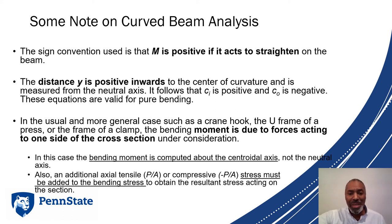These equations are valid for pure bending. In the real world case of a crane hook or clamp, the bending moment is due to a transverse force that acts on one side of the cross-section. Because of that, the bending moment is computed about the centroidal axis, not the neutral axis. Also, an additional axial tensile or compressive load must be added to the bending stress to obtain the resultant stress acting on the section.